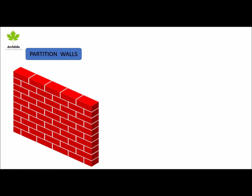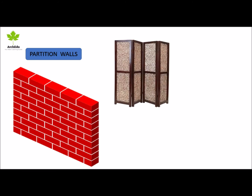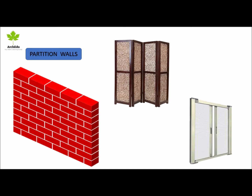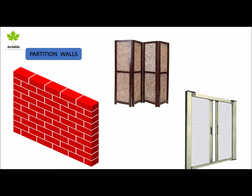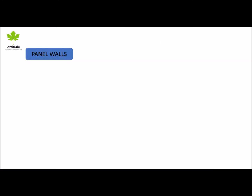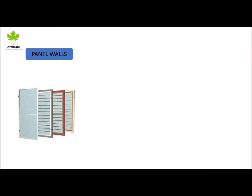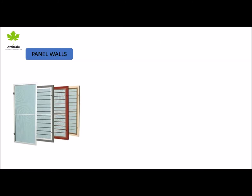Partition walls: it is used in separating spaces within buildings. It can be solid, constructed from brick or stone. The partition wall is secured to the floor, ceiling, and walls, and it is strong enough to carry its own load.